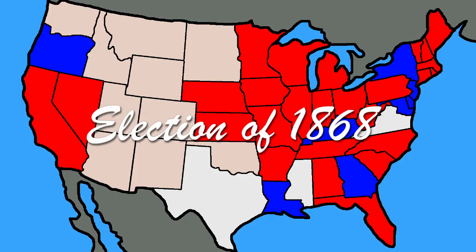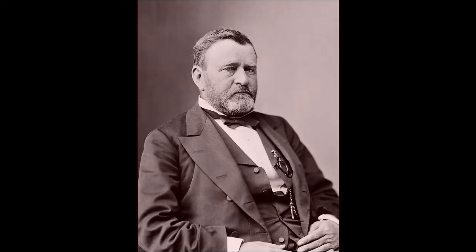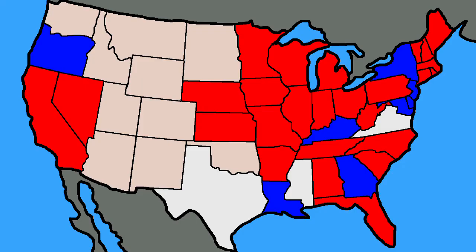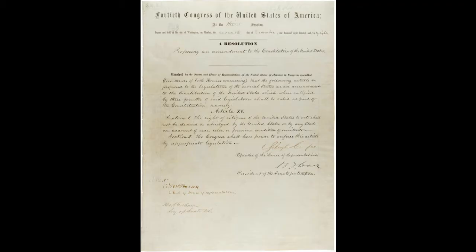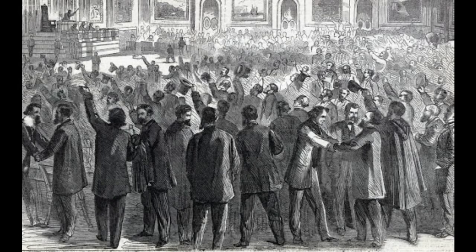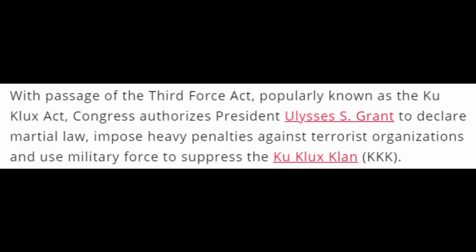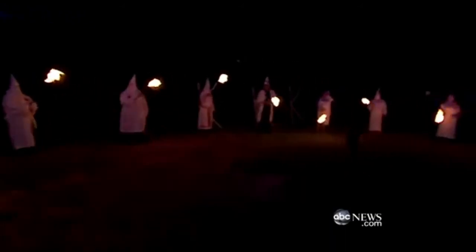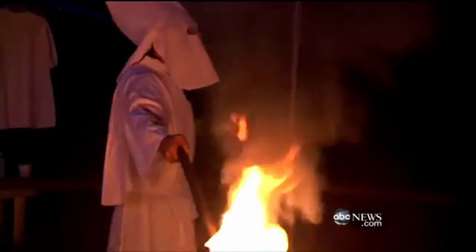In the election of 1868, Ulysses S. Grant, a Civil War hero, got elected president. Soon afterward, Congress approved the 15th Amendment, solidifying that no man could be refused the right to vote because of their race. Thanks to Johnson being voted out of power, Congress also enacted laws to clamp down on racial violence, even sending the military to take out the KKK in 1871. Obviously that wasn't very successful, but they tried.